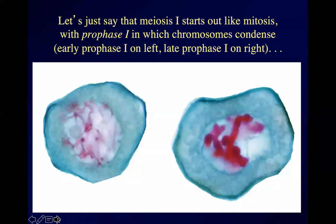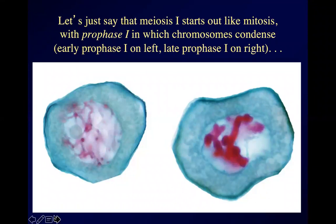These happen to be pictures taken from flower anthers — the organs where they make pollen. A little bit easier to get a hold of those than testes. In prophase one, the chromosomes condense and become visible. On the left, that's early prophase one — you can see the chromosomes but they look kind of stringy. By late prophase one, the chromosomes look a lot more thick and distinct.